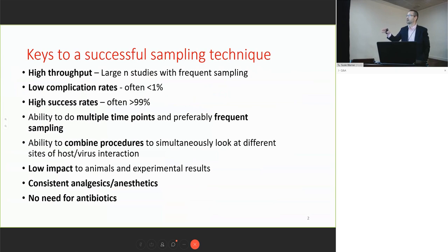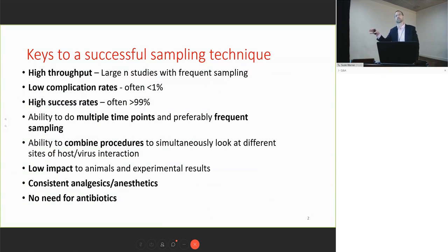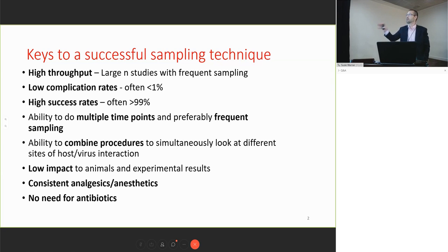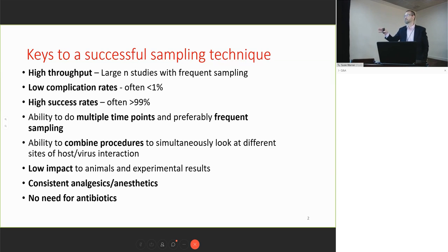The techniques I'll be talking about meet these criteria. Preferably we'd like to use consistent analgesics and anesthetics so we don't have confounding variables. For our models, we use sustained-release buprenorphine as our workhorse analgesic, so we're nice and consistent. We combine that with some local anesthesia in some of these biopsies for a consistent, low immunological impact analgesia.